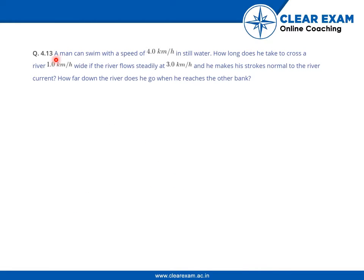Welcome back. So the question is: A man can swim with a speed of 4 km per hour in still water. How long does it take to cross a river which is 1 kilometer wide if the river flows steadily at 3 km per hour and he makes his strokes normal to the river current? How far down the river does he go when he reaches the other bank?